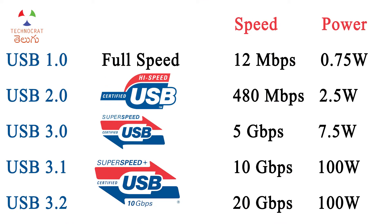There are many different USB versions with different speed and power. USB 1.0 is full speed — it can use 12 Mbps speed. USB 2.0 supports a maximum speed of 480 Mbps and can charge devices at 2.5 watts.